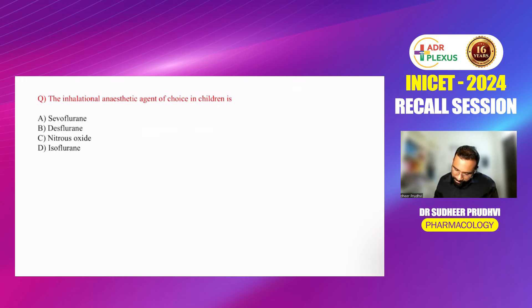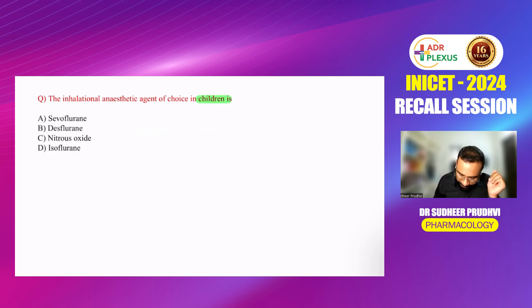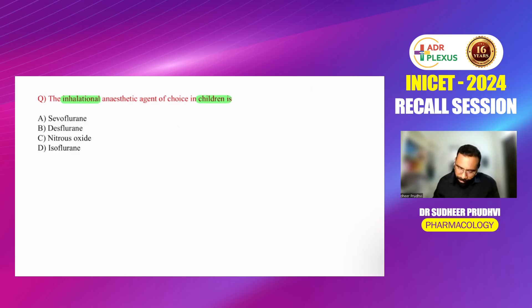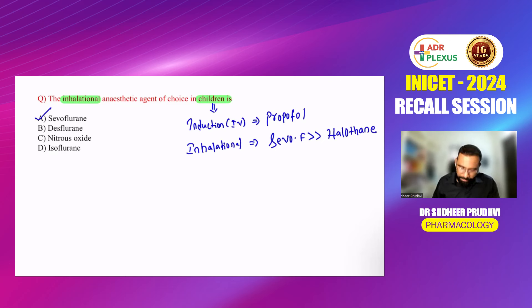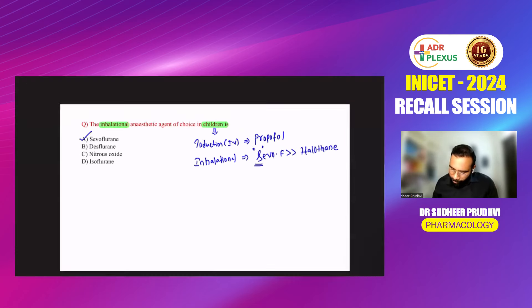The inhalational anaesthetic agent of choice in children: note there are two key points — it's about children and inhalational. If the question were simply about induction in children, we would give IV propofol. But for inhalational agents in children for induction, we use sevoflurane > halothane. The answer is sevoflurane — it has a sweet odour.